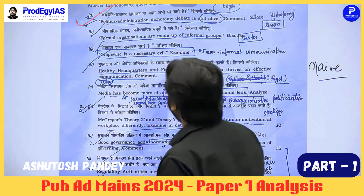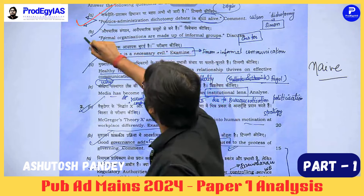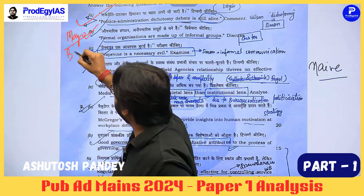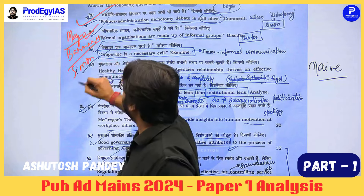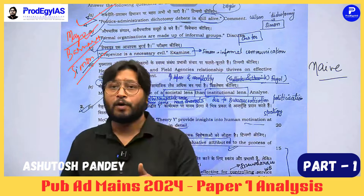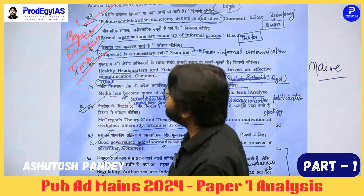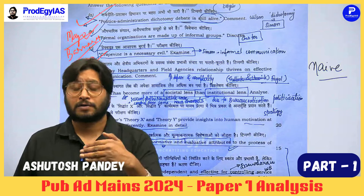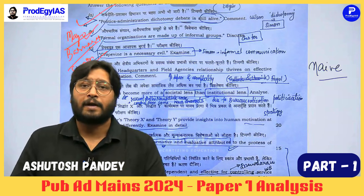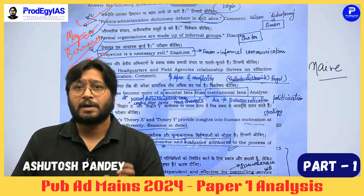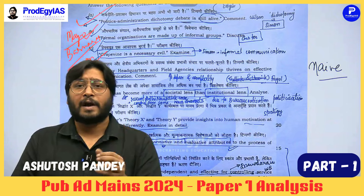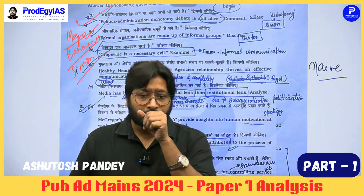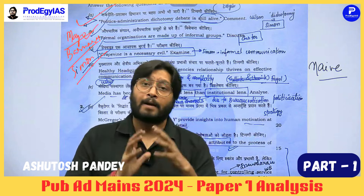Question Two: Formal organizations are made up of informal groups — this is Bernard's and Simon's view, and Mayo was the originator. Mayo, Bernard, Simon, Argyris, and Likert cannot be denied. All of them realized that formal organizations have a limited impact. Classical theories had a limited perspective — viewing people purely as economic rational beings or as adjuncts to machines. This changes once Elton Mayo and Mary Parker Follett come into the picture, highlighting the need for a human-centric study of organizations.